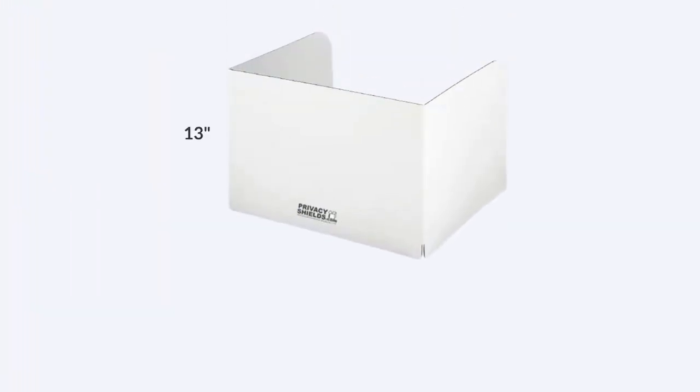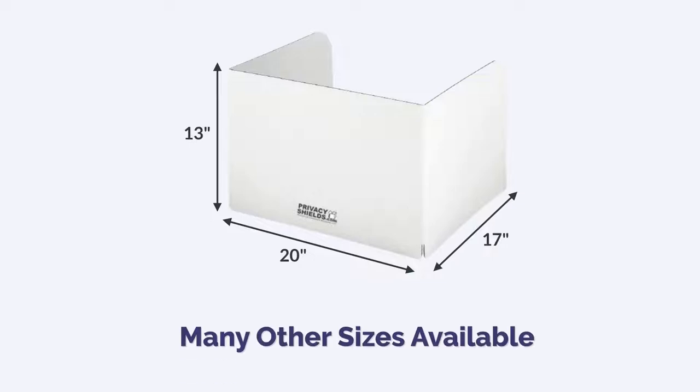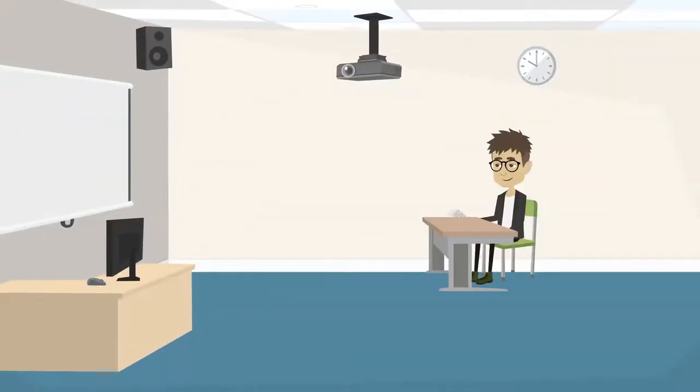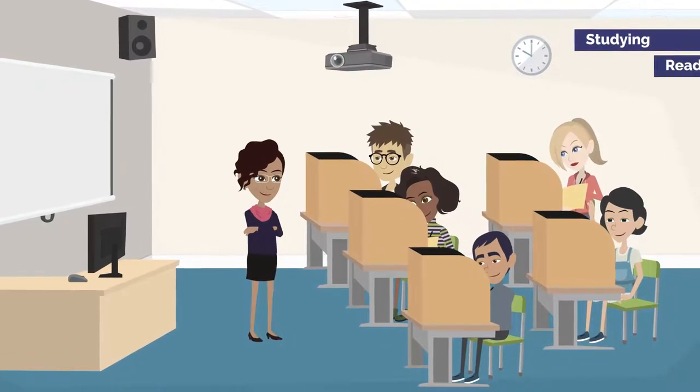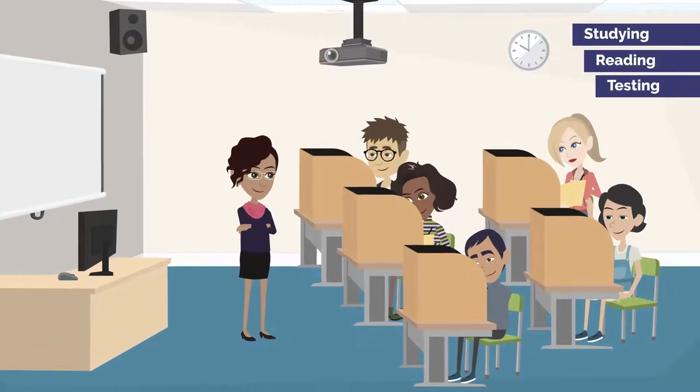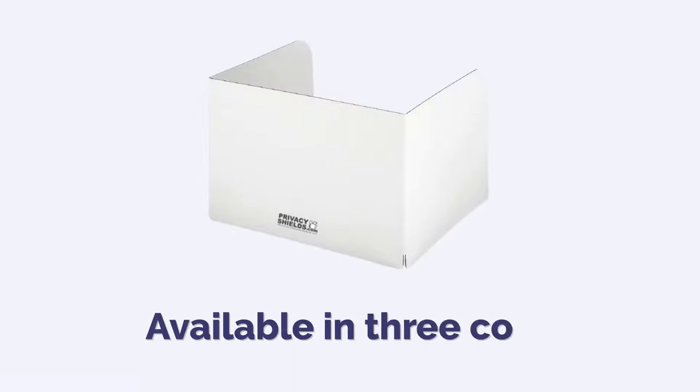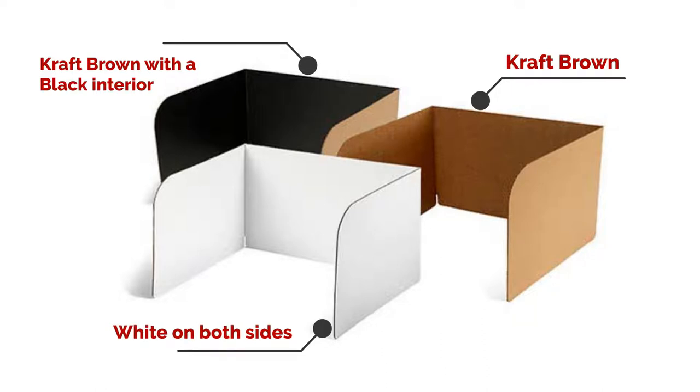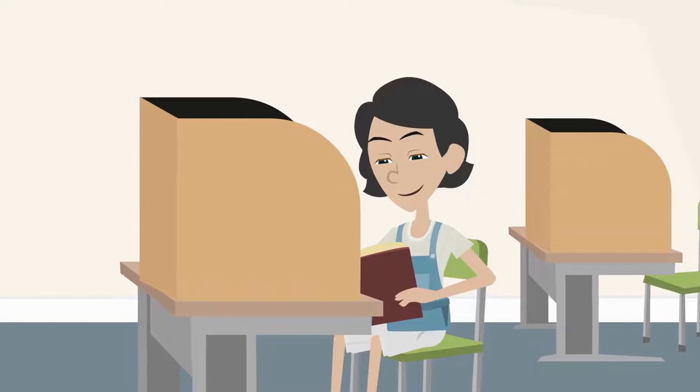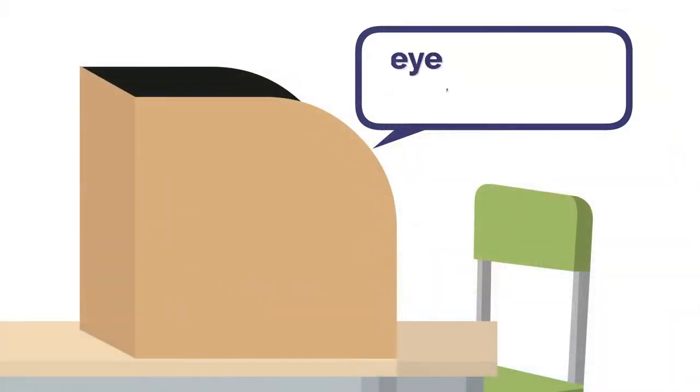Our desktop privacy shield is 13 inches tall, 20 inches wide, and 17 inches deep. This desktop shield ensures a suitable environment in the classroom for studying, reading, and testing. The 13-inch shield is available in three colors: craft brown, craft brown with a black interior, or white on both sides. They're guaranteed to sit level and have rounded corners for your students' eye safety.